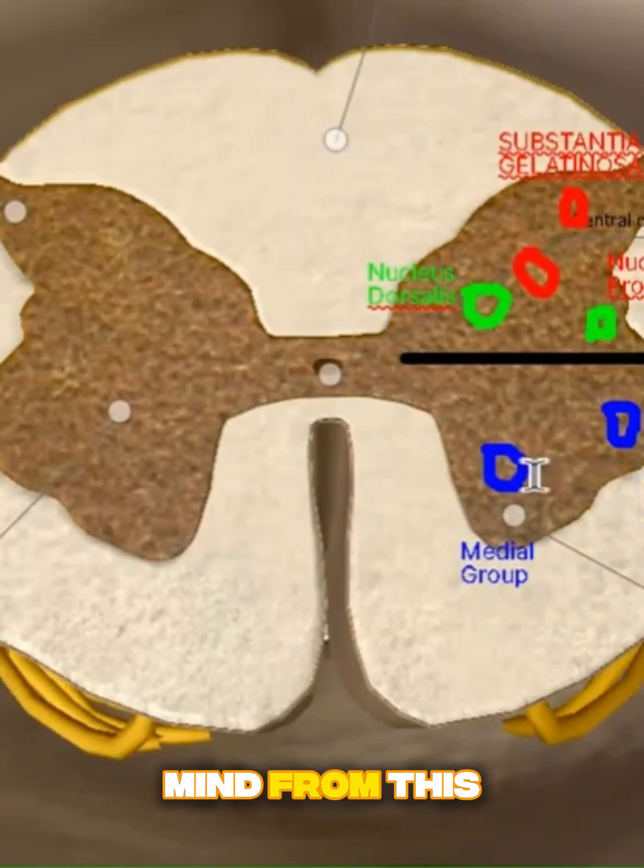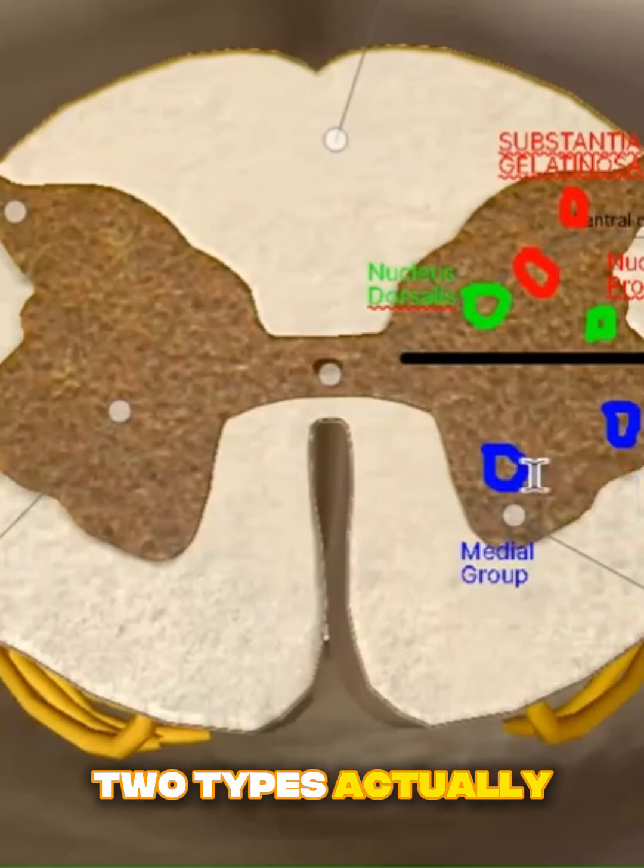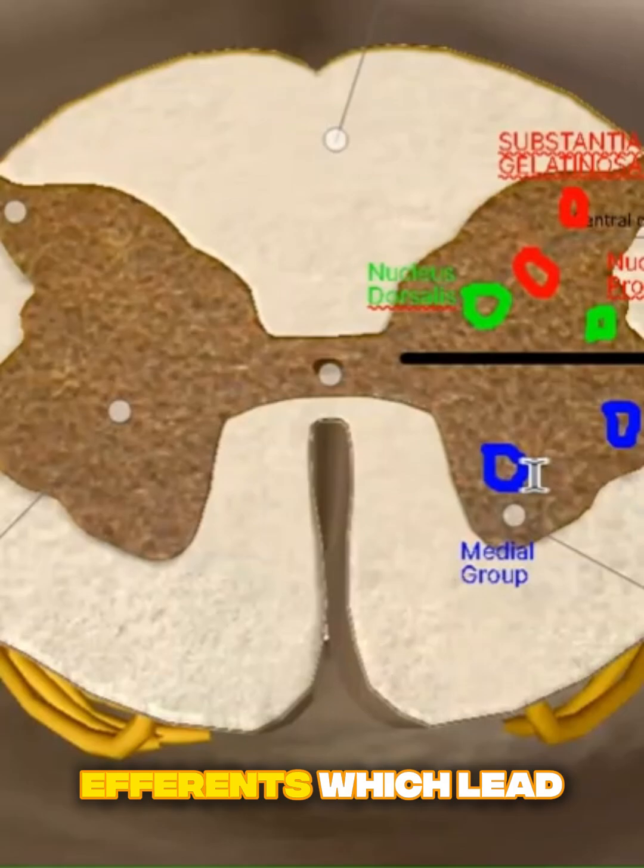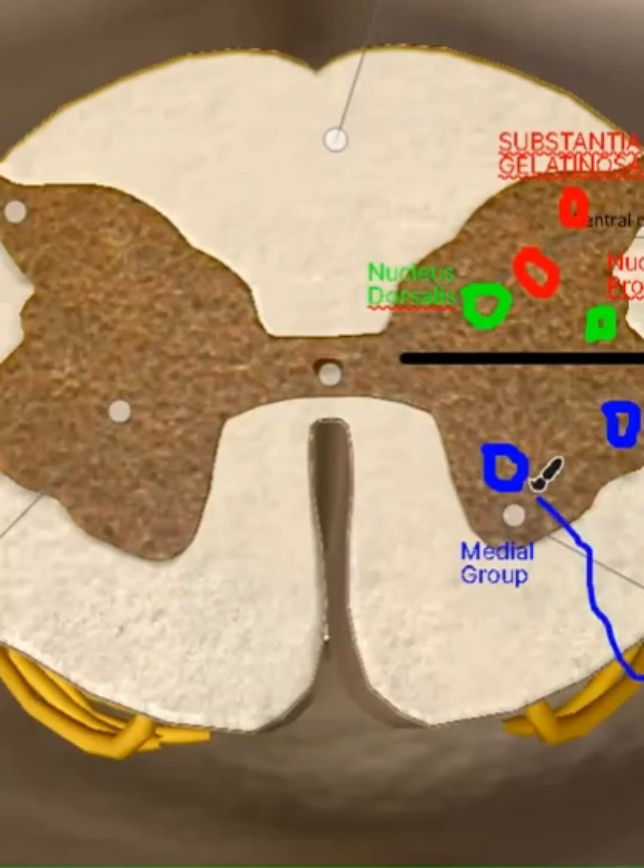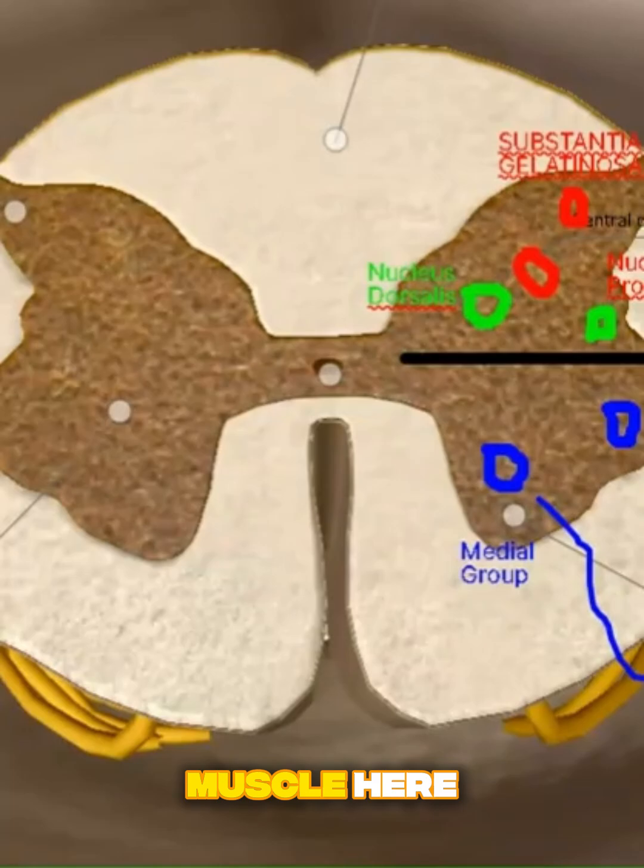And keep in mind, from this nucleus, there are two types actually, for each. You have, well not the nucleus itself, but the efferents which relieve them. You have your alpha efferents and the gamma efferents. The alpha efferents, they will go and supply the extrafusal fibers. The extrafusal fiber means the outside of the muscle.